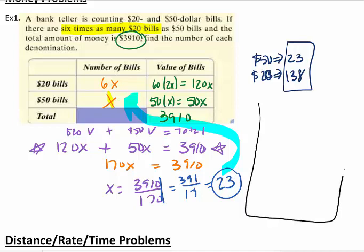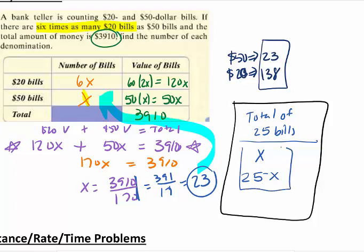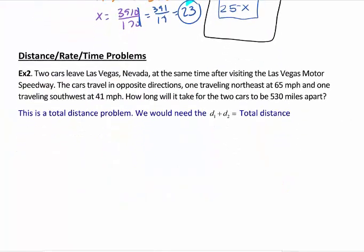I want to give you a quick side note. Sometimes they're going to give you a relationship where they will tell you that you have a total of 25 bills. In this case, if they tell you that you have a total of 25 bills, this is where you've got to be careful. You call one of them x, and a lot of y'all want to do x minus 25, but it should be 25 minus x. Because if I add these two together, you want a total of 25, so the x's have to cancel.